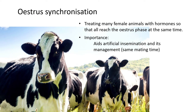This lesson is all about oestrus synchronization. Last time we talked about all the different phases of oestrus, and today we're going to talk about how oestrus can actually be manipulated so that all cows go into oestrus at the same time. Basically, synchronization means treating many female animals with hormones so that all reach the oestrus phase simultaneously.